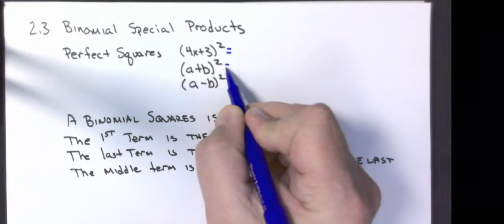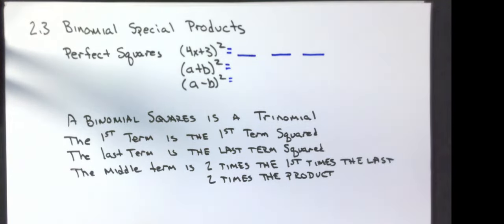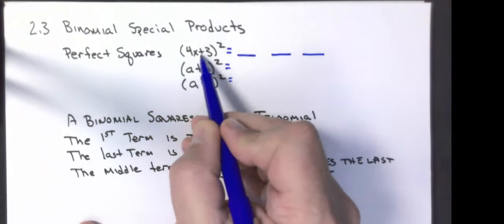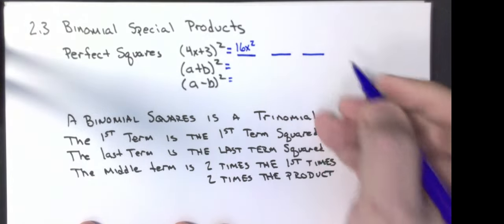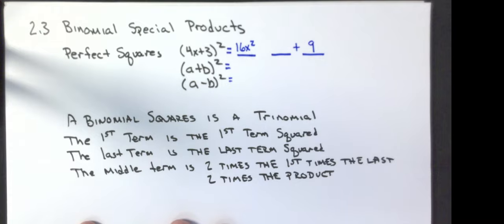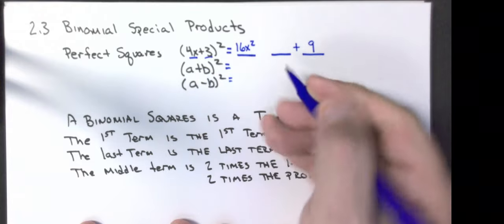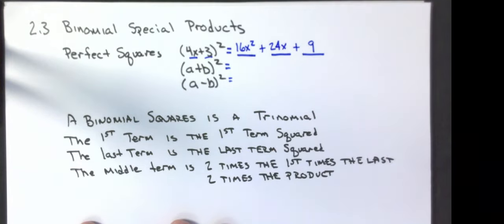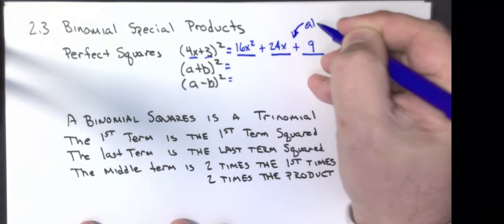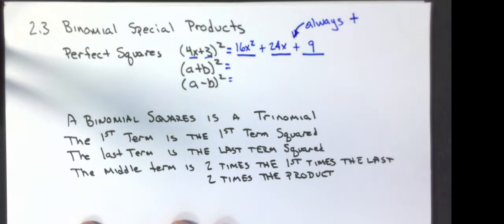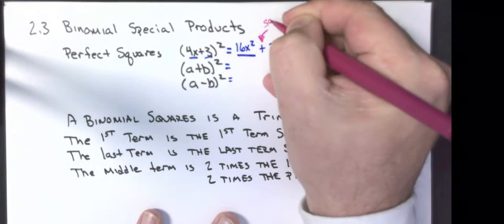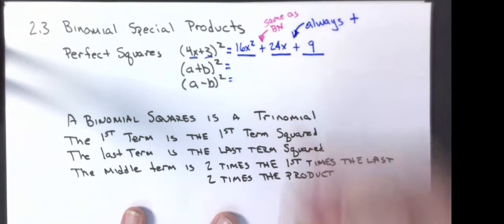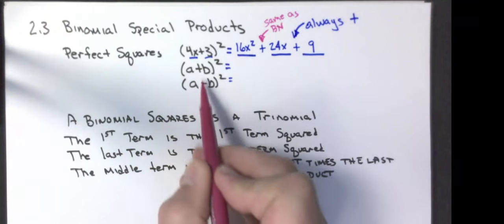A binomial squared is a trinomial — trinomial has three terms. The first term is the first term squared. The last term is the last term squared: 3 times 3 is positive 9. The middle term is 2 times the product: 3 times 4x is 12x, and 12x times 2 is 24x. One thing to note: the last sign is always positive, because squaring is always positive. The middle sign is the same as the sign in your binomial — positive stays positive, negative stays negative.